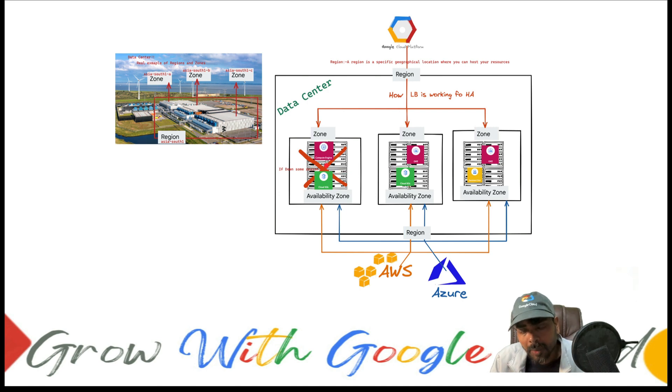For example, if my application is running in a specific zone like Asia South 1a and an outage or disaster happens in this zone, how will my application serve end users? This is the concept that's been set up so that end users can get high availability with minimal downtime.